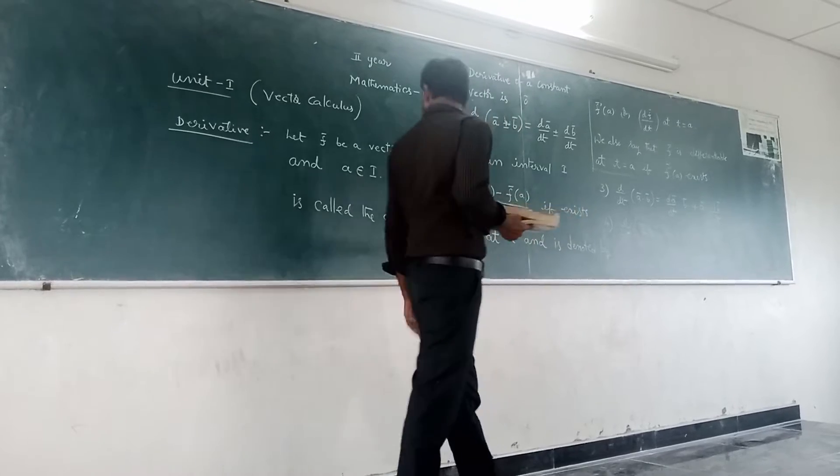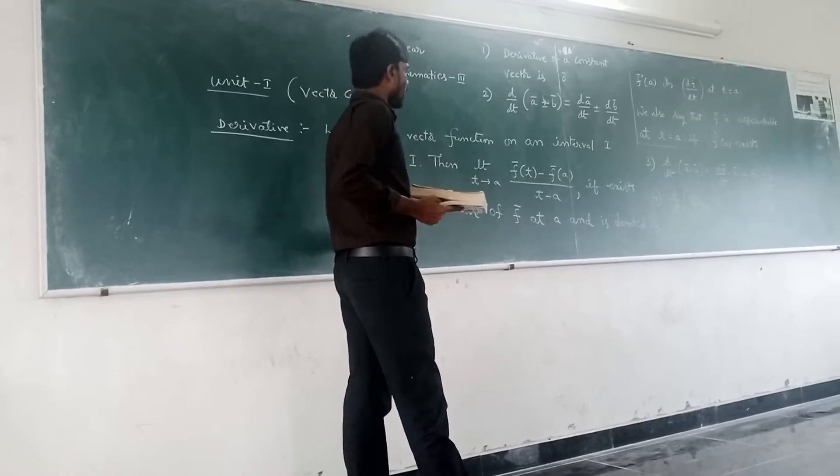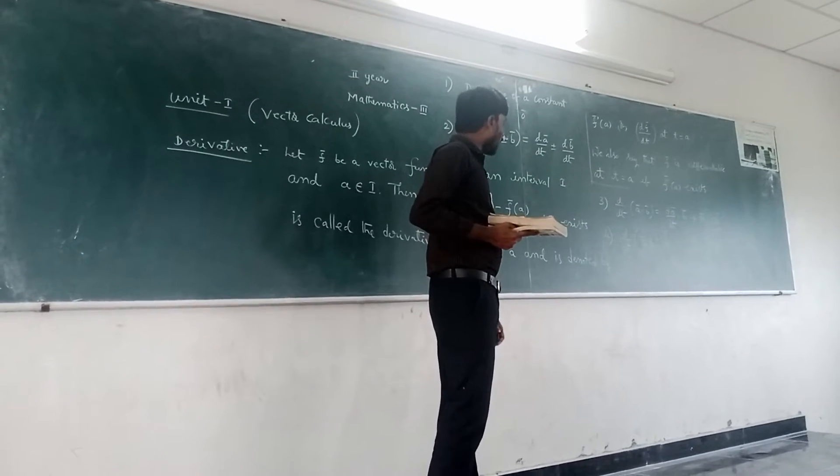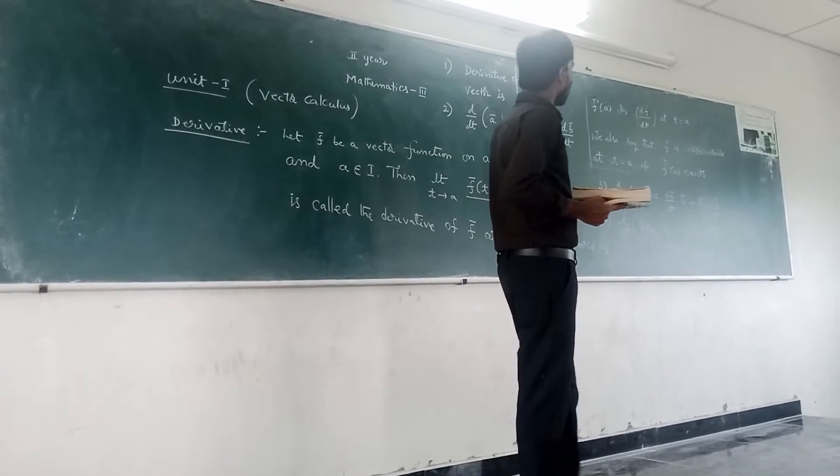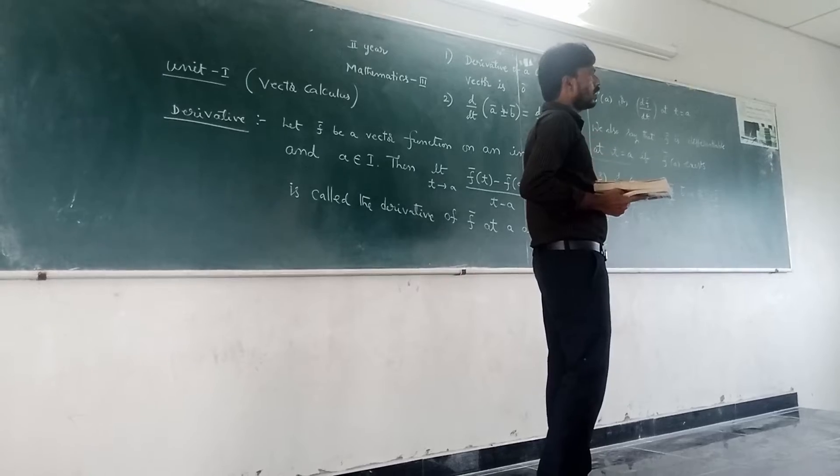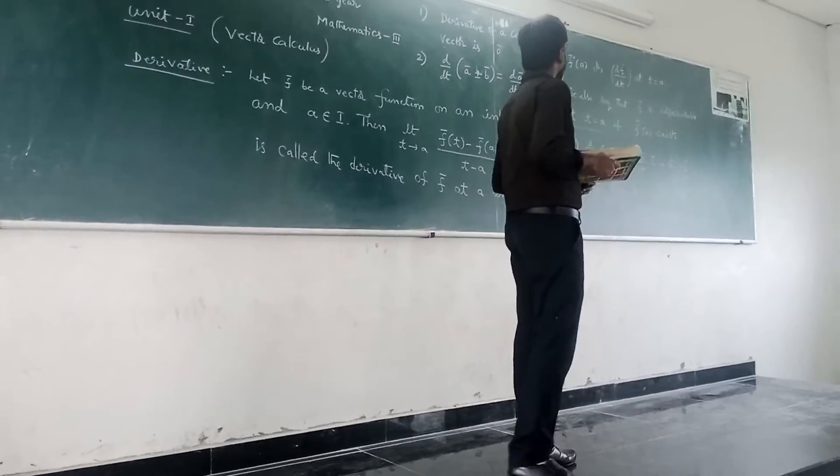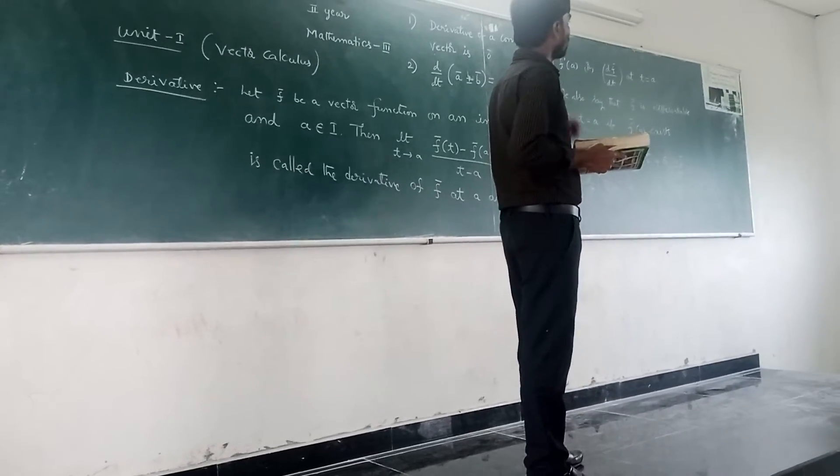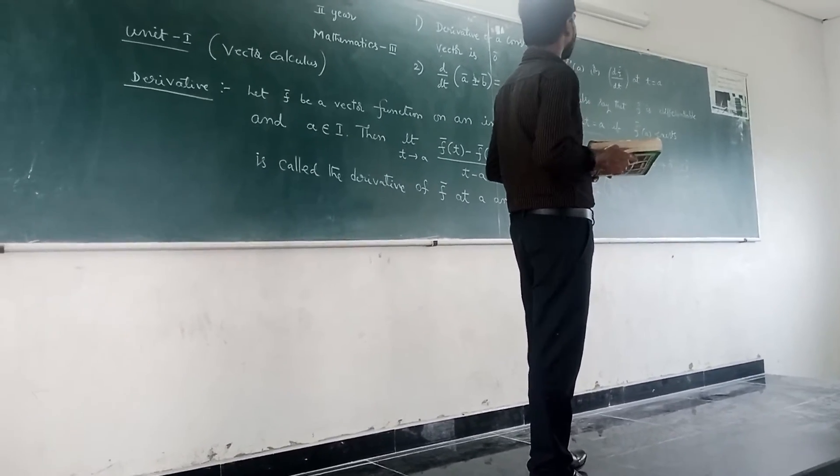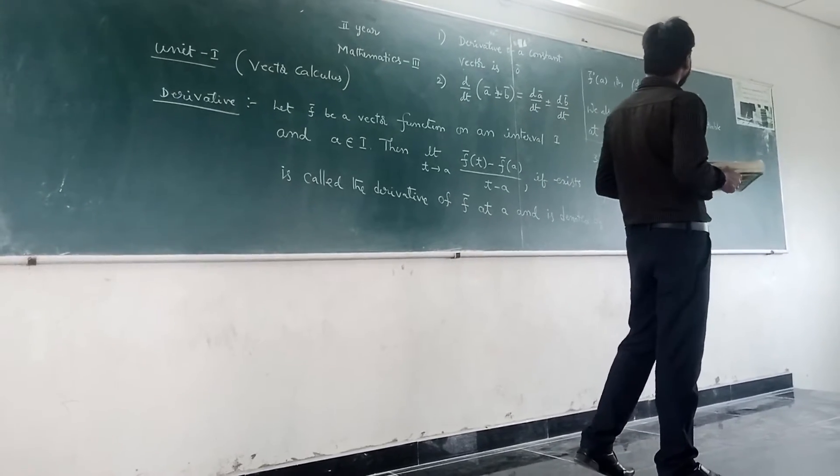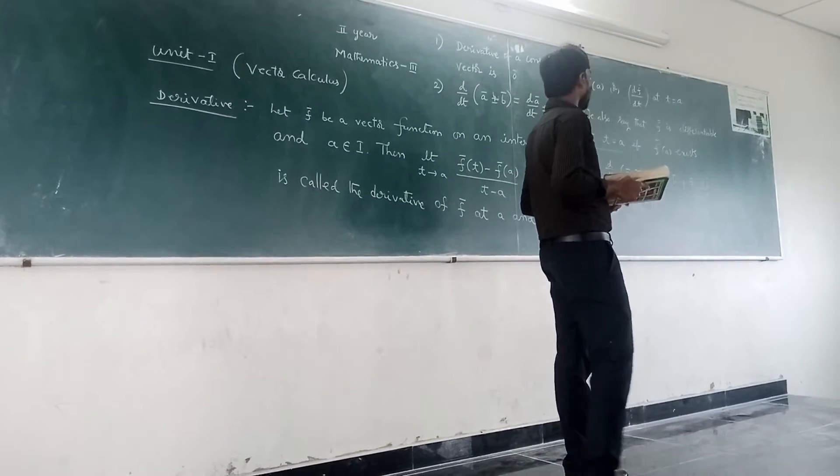This is called the derivative of f dash at a and is denoted by f dash of a, or df by dt at t equal to small a. We also say that f is differentiable at t equal to small a if f dash of a exists.